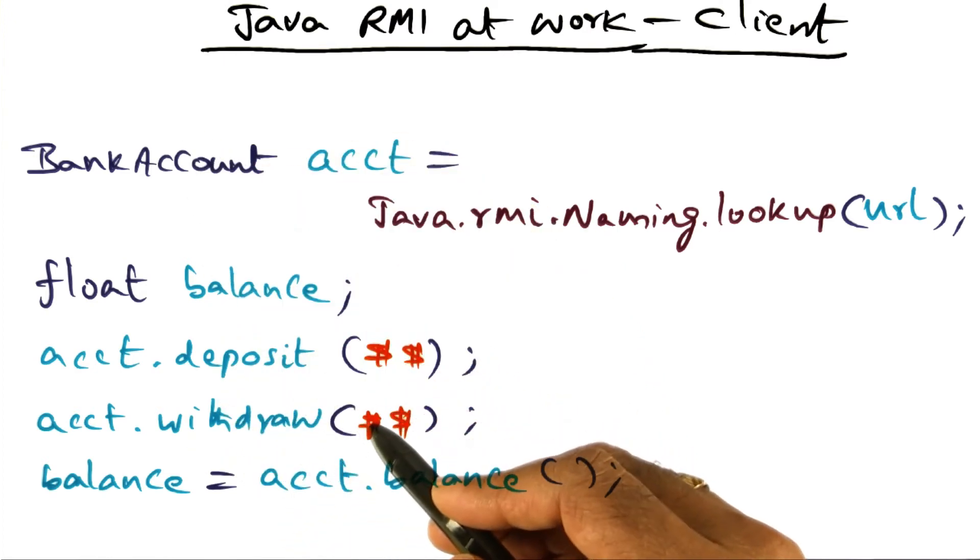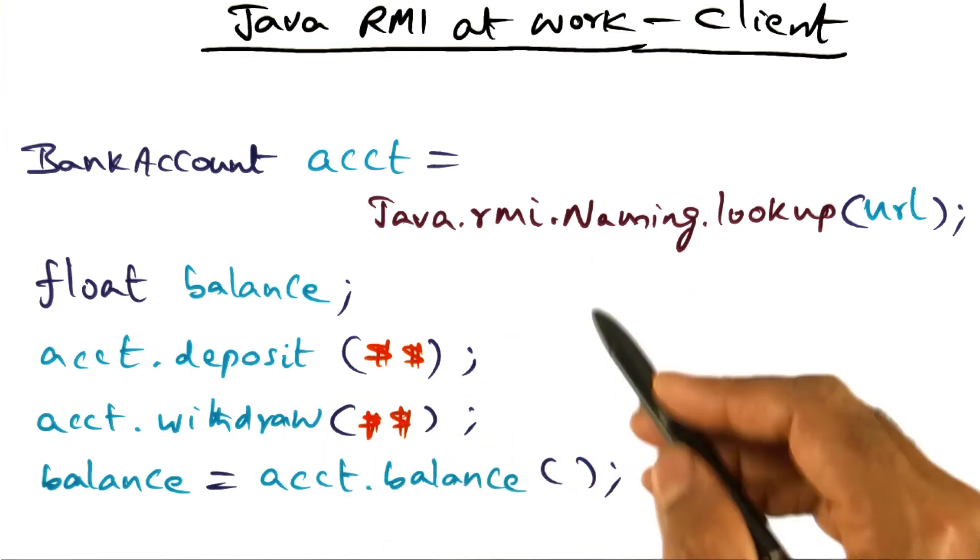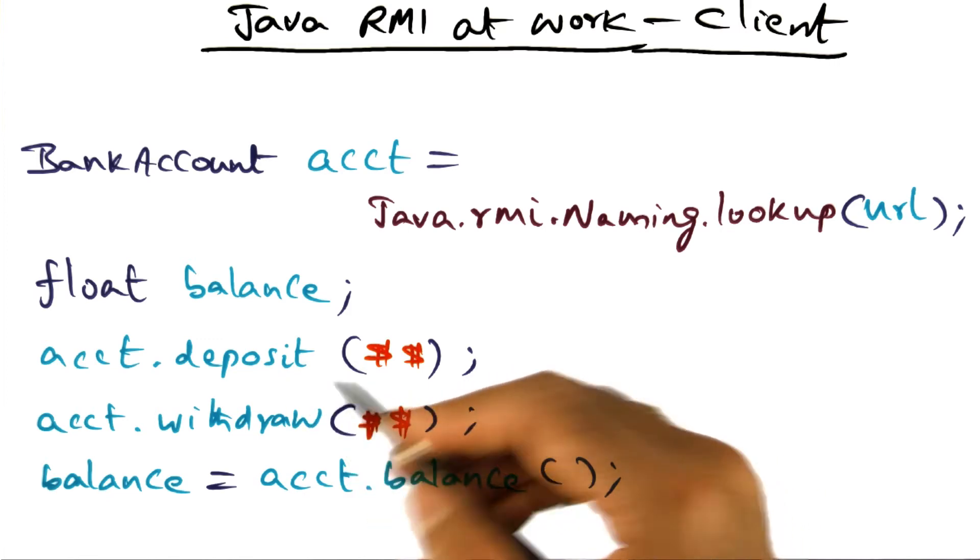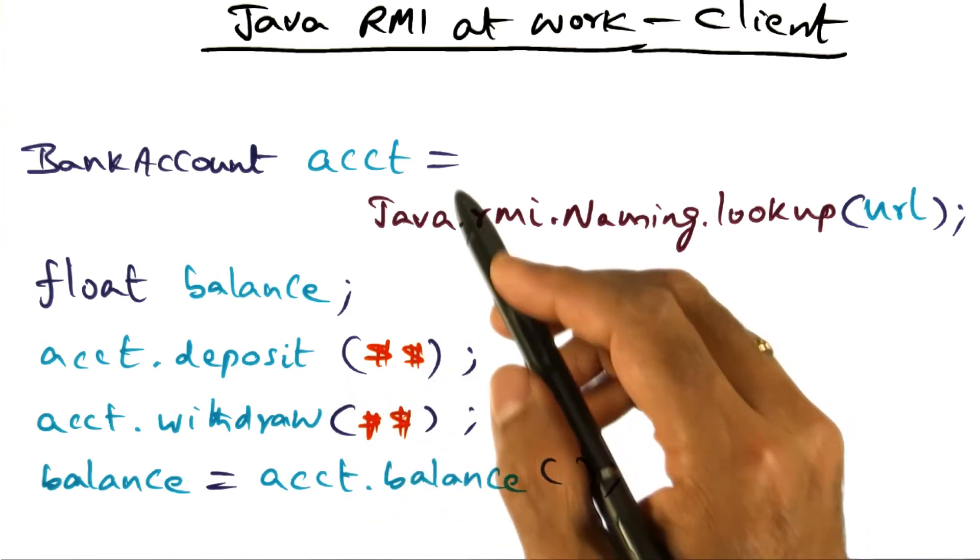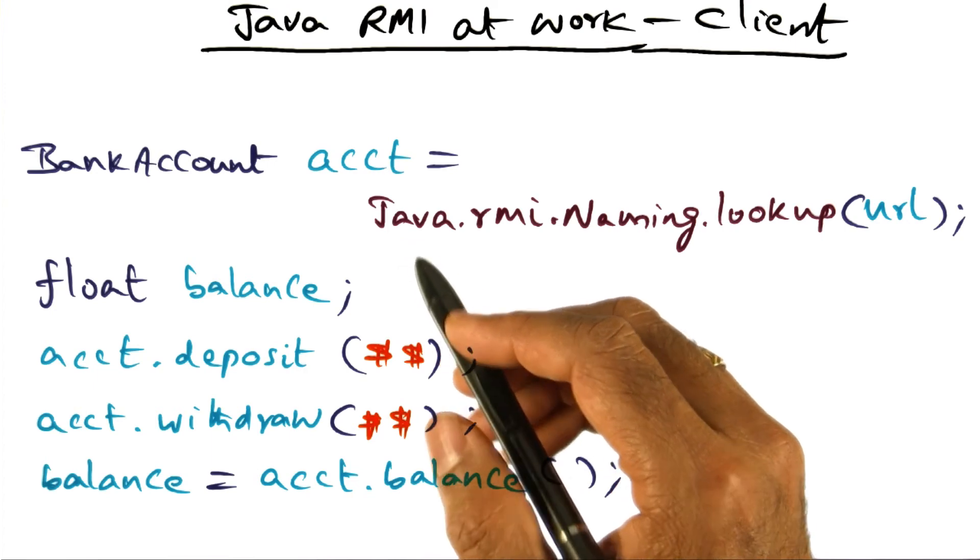But each of these is really a call going out to the server wherever that server happens to be. The Java runtime system knows how to locate that server to do this invocation. That's the power of Java RMI. The client does not know and does not care about the location of the server.